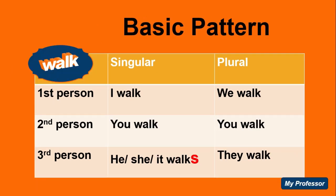If we take the basic form of the verb, and only in the third person, we're going to add an S to the verb. For example, if we take the verb 'walk' and conjugate it, we're going to have: I walk, you walk, he/she/it walks, we walk, you walk, they walk. The only change that happens is in the third person singular, where we add an S to the basic form of the verb. The same thing will happen with other verbs that are not irregular, in the present tense.